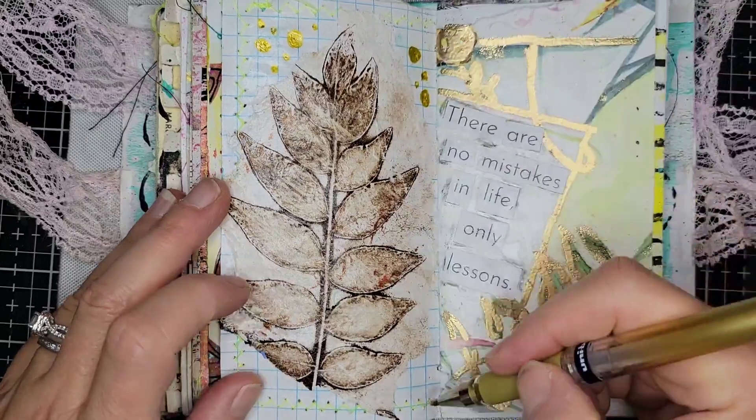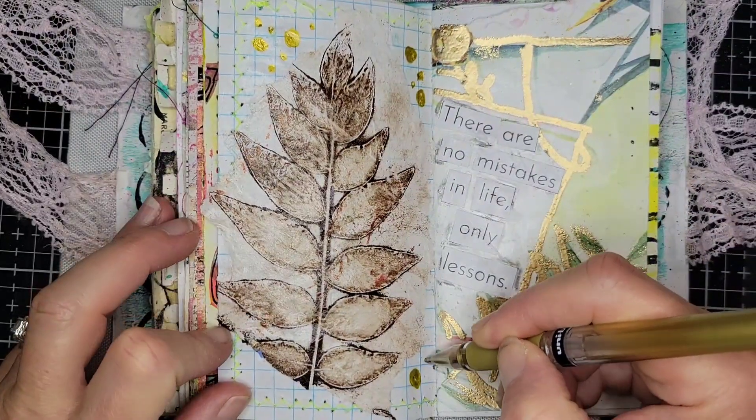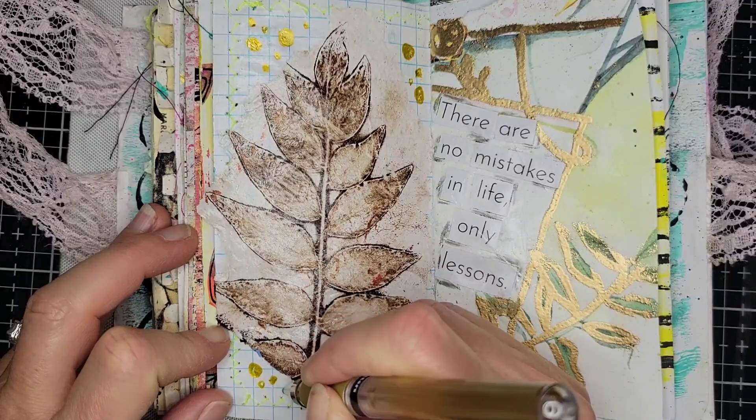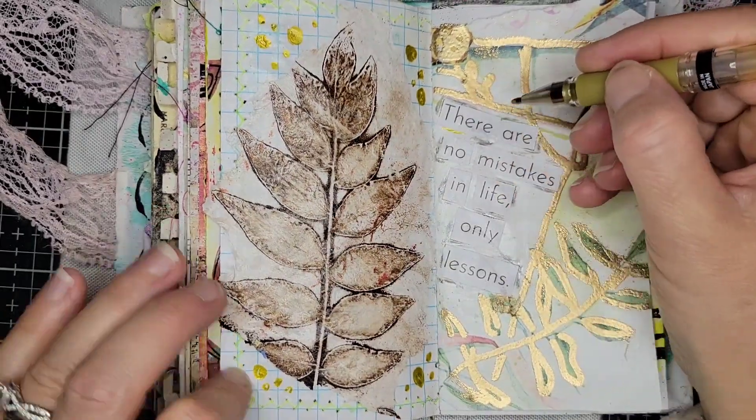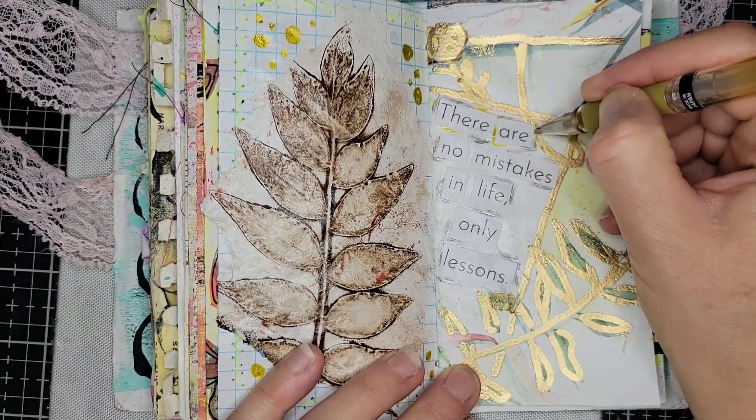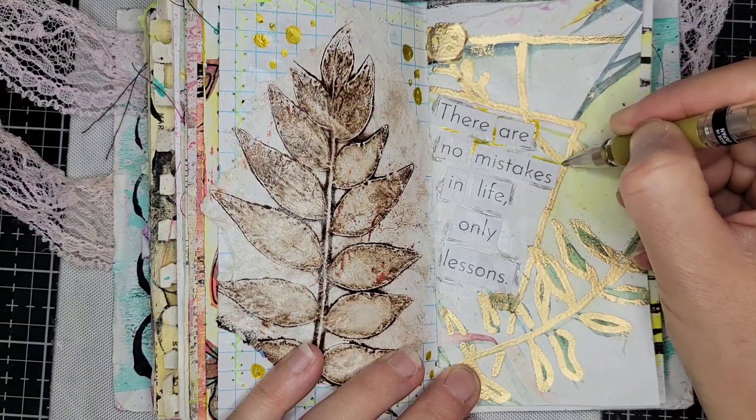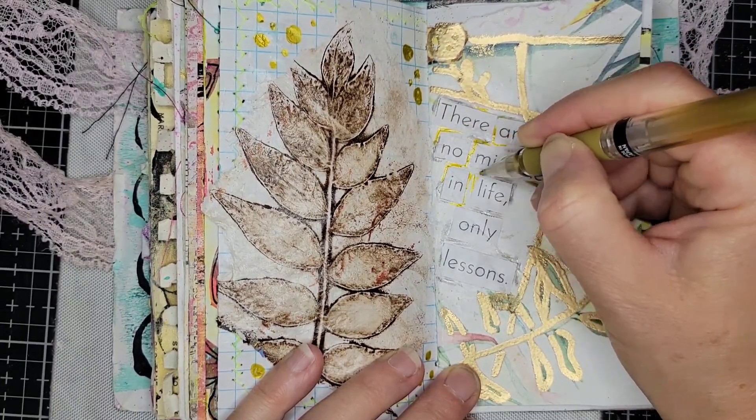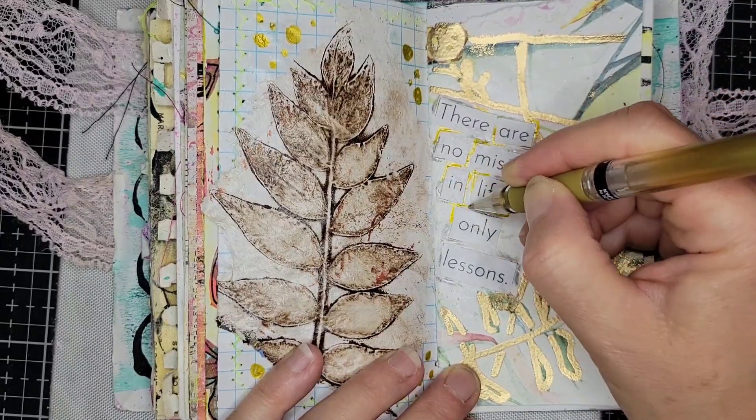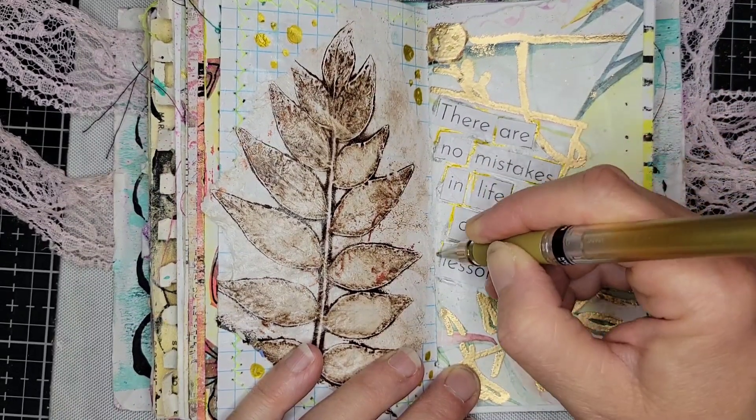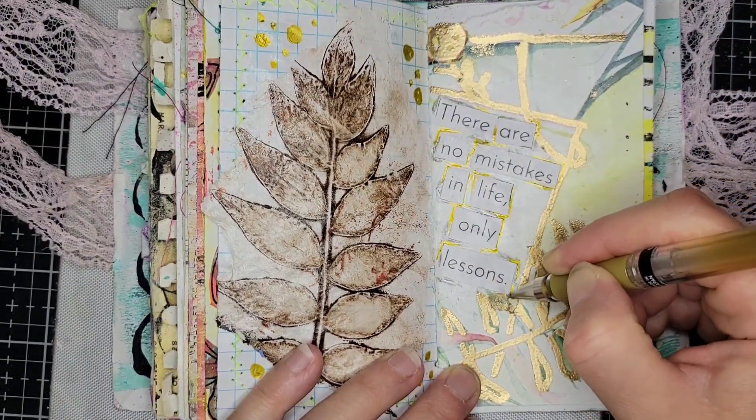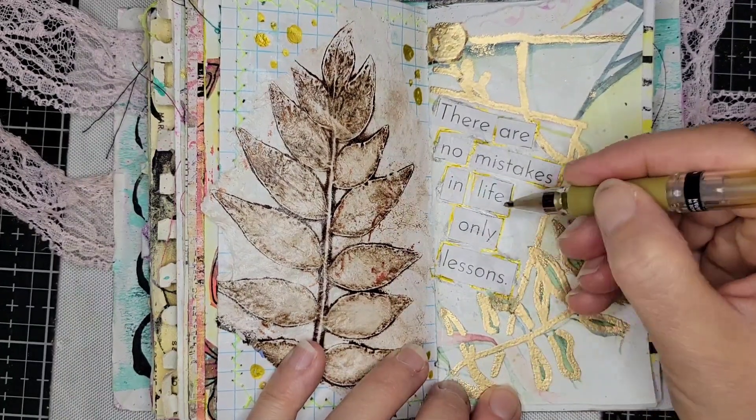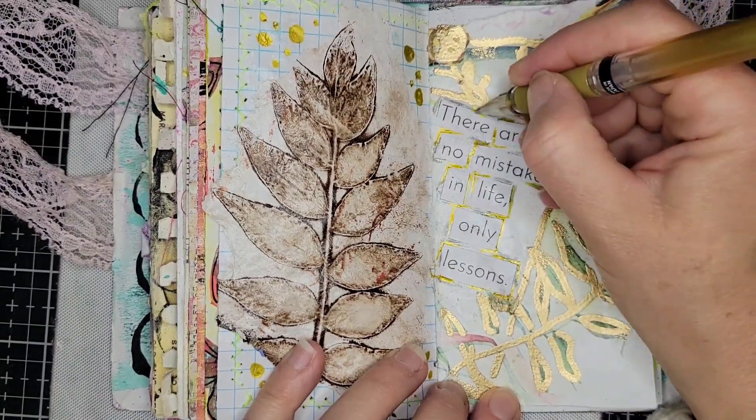So I grabbed my gold pen to tie in that gold that was on the right side of the page and just made some marks, some circle marks in various sizes around the left side of the page. And then I wanted those letters to kind of pop a little bit more so I came in and put some gold highlights around the cutout words.